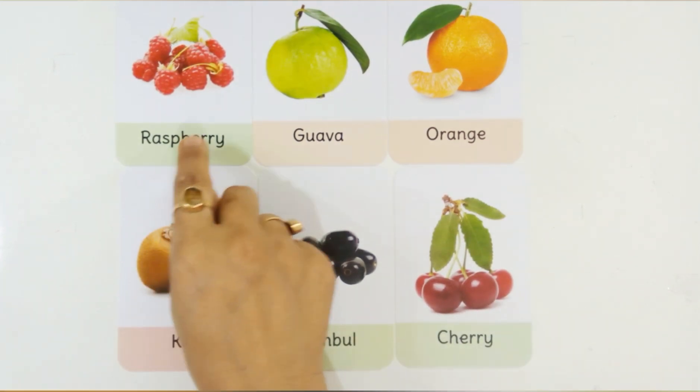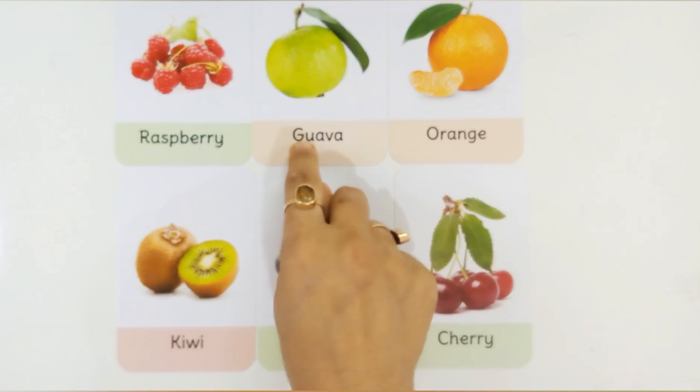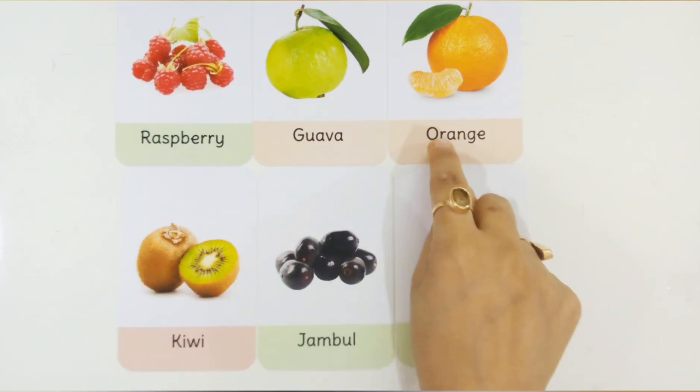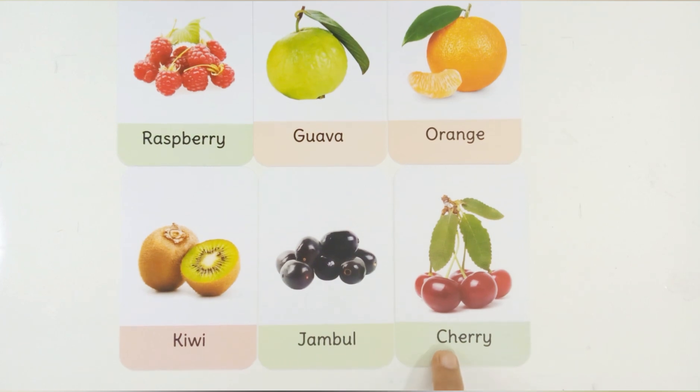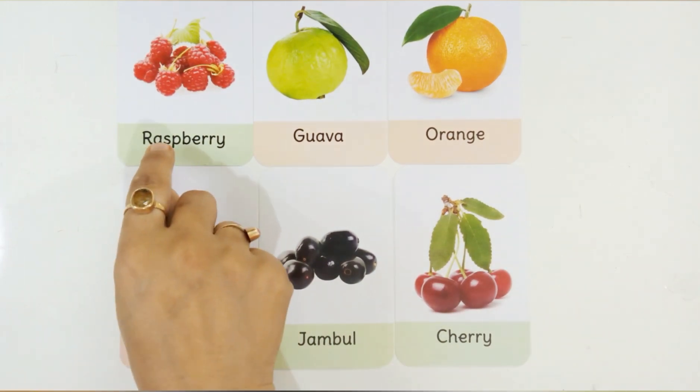R for Raspberry. G for Guava. O for Orange. K for Kiwi. J for Jambul. C for Cherry.